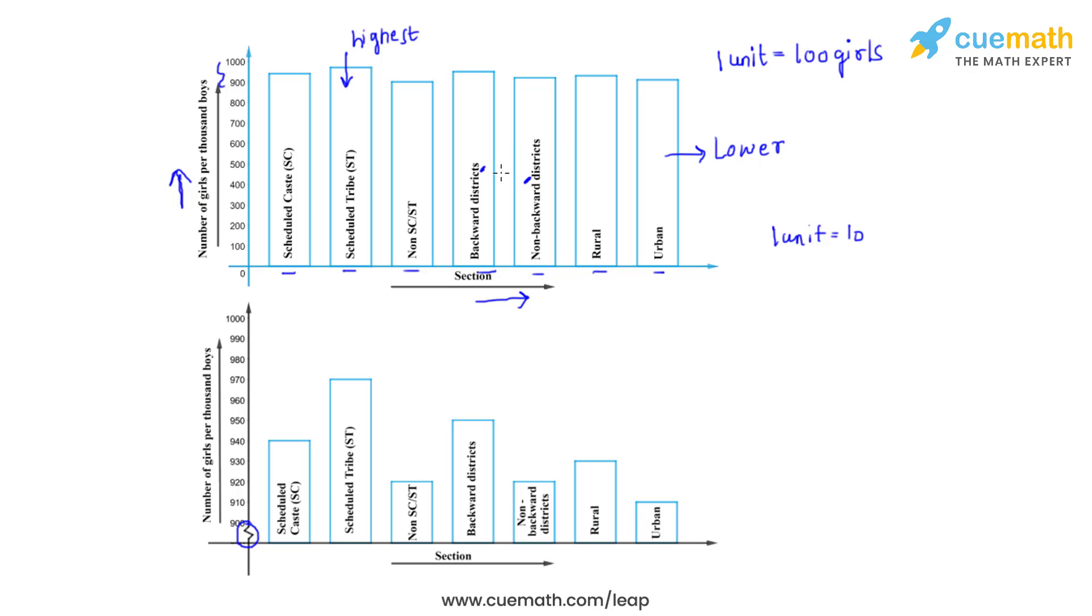The second bar graph gives us a better visual representation of the different variations that can be seen in the number of girls per thousand boys in different sections of Indian society.